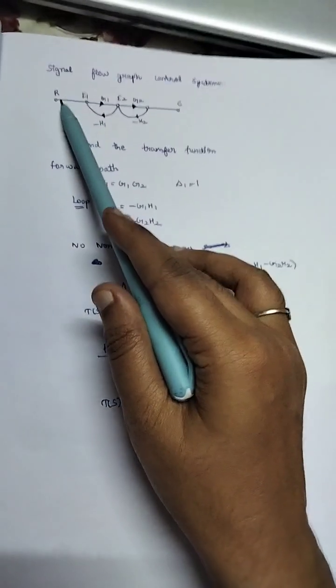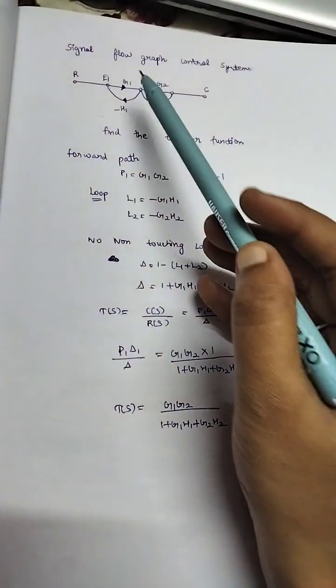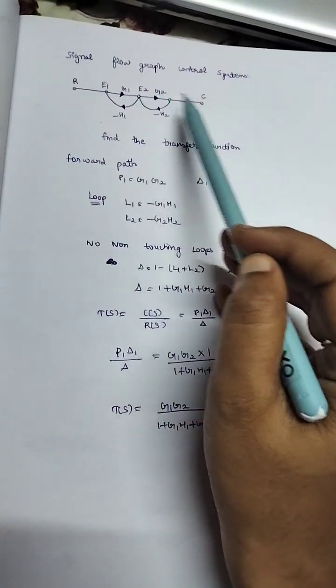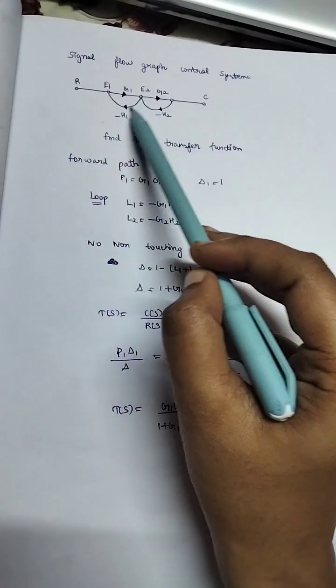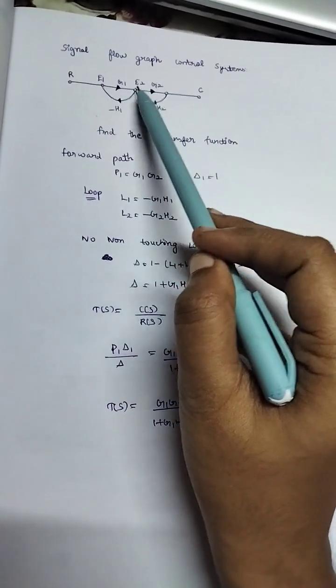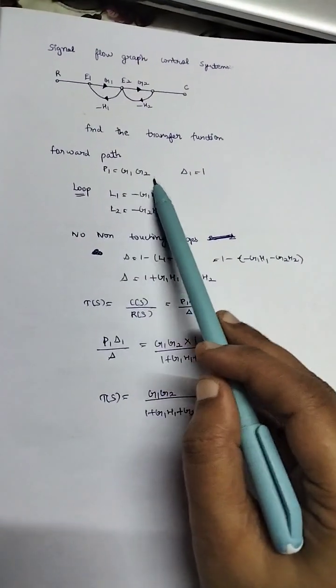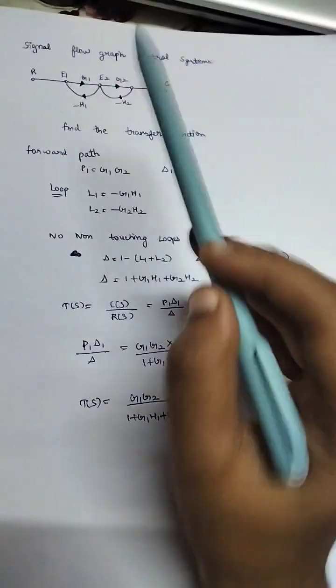So we can see from R to C, from e1 to e2, only one forward path g1, then e2 to c, g2 alone. So only one forward path. These are not forward paths; they will not be counted. So the path is one: g1·g2. Now, what are the loops? Loops are two.